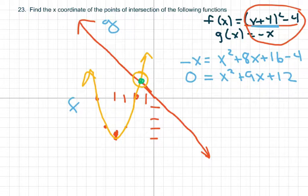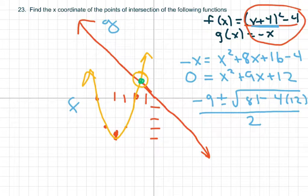So the quadratic formula would be negative b, which is negative 9, plus or minus the square root of 81 minus 4 times 12 over 2. 2 times 1 is 2. So you get negative 9 plus or minus the square root of 33. Is that right? 81 minus 48 over 2.